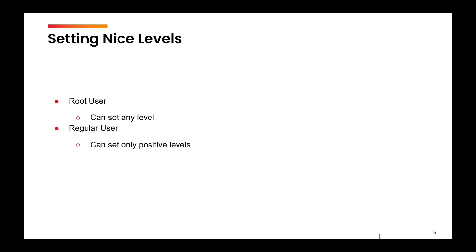The default nice level for any process is 10. So by default, if you don't assign a nice level, whichever process or command you execute gets a nice level of 10. There are different commands with which we can check the nice levels.